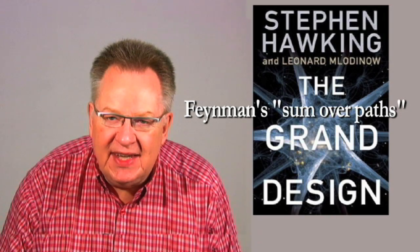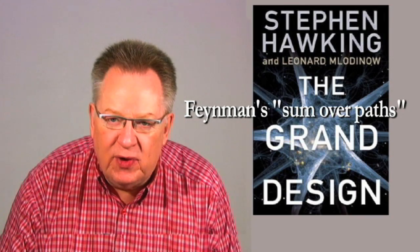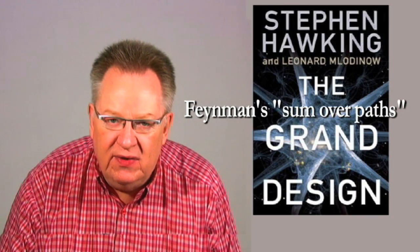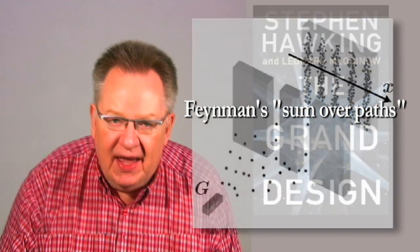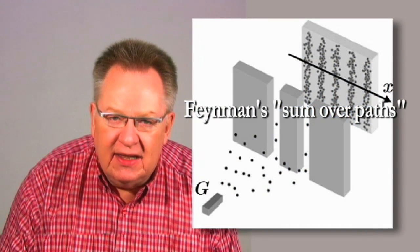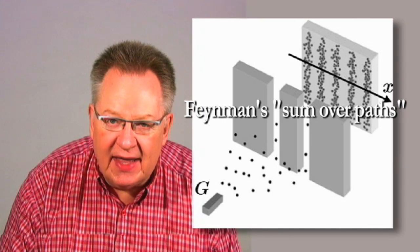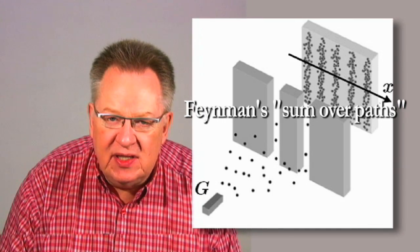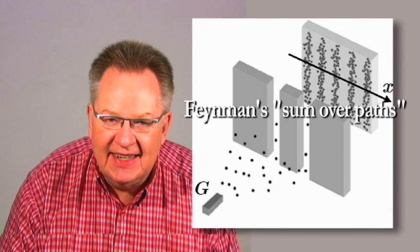Hawking and Mlodinow say free will is an illusion because of the existence of this most likely path for every particle in the universe. Which contradicts Feynman's theories and the evidence provided by numerous double-slit experiments, clearly showing that particles do indeed take all paths, not just the most likely one provided by Feynman's Sum Over Histories.